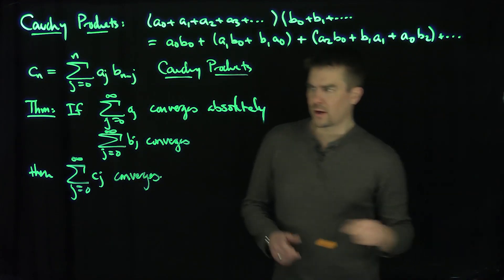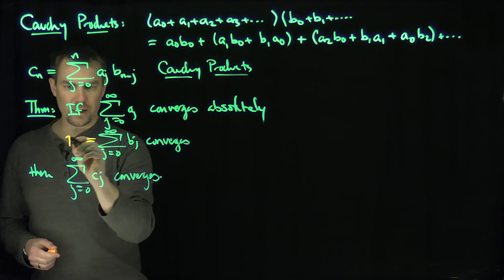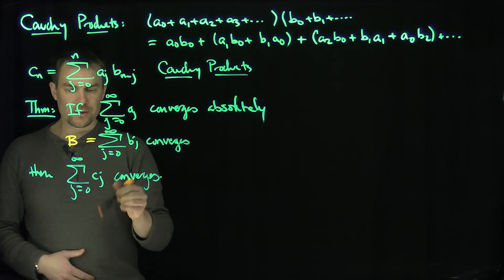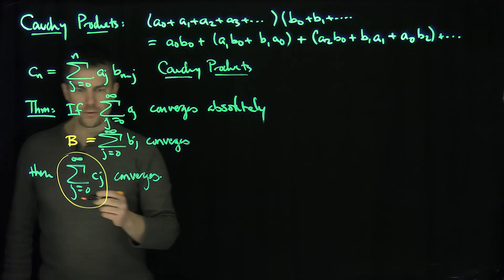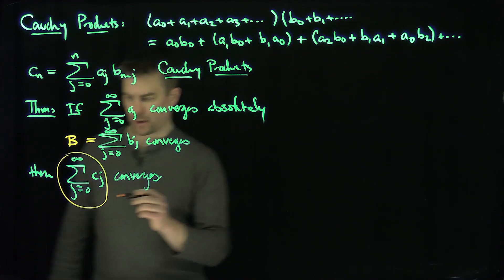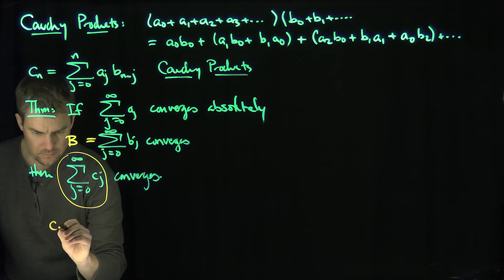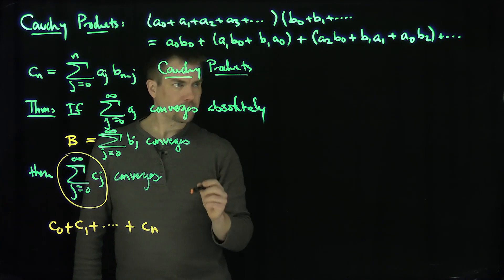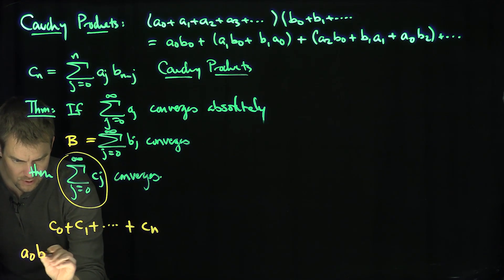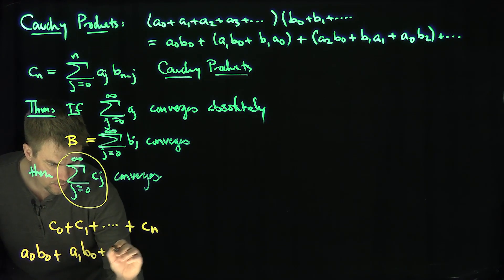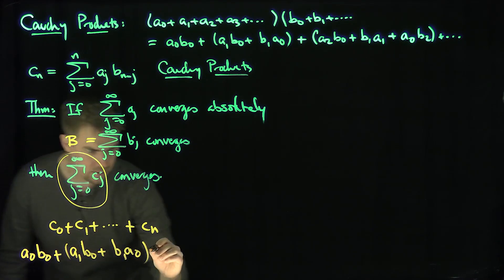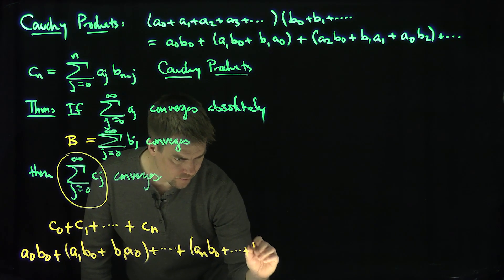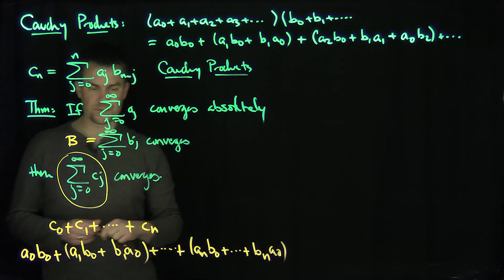Here's the idea. We're going to call the sum of the b-series capital B. Now let's look at the partial sums. If we look at c0 plus c1 plus all the way down to cn, it's going to look like a0·b0, plus a1·b0 plus b1·a0, and so on, all the way down to an·b0 plus ... plus bn·a0. That's the nth partial sum of the c-series.